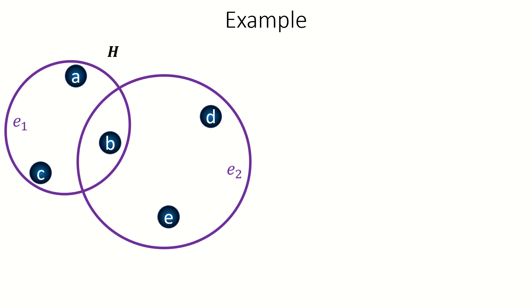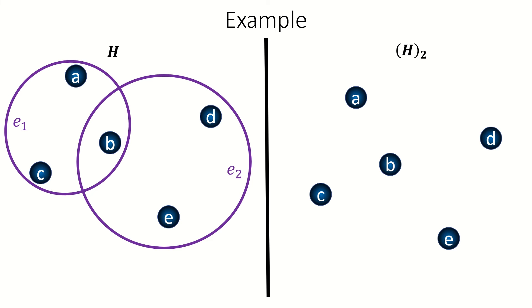As an example, what's the two section of this hypergraph? First, generate the vertex set of our two section. Next, find the adjacencies between vertices. In the hypergraph, vertex a shares an incident edge e_1 with vertices b and c. So in the two section, vertex a will be adjacent to vertices b and c.